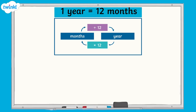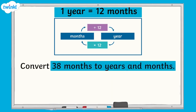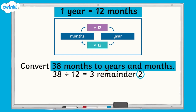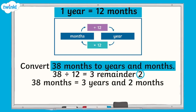To convert months to years, we divide the number of months by 12. If there is a remainder, this becomes the additional number of months. For example, to convert 38 months to years and months, we would divide 38 by 12, which equals 3 remainder 2. The remainder becomes the number of months, so 38 months equals 3 years and 2 months.